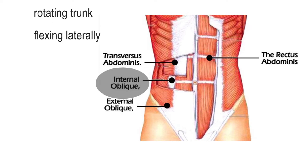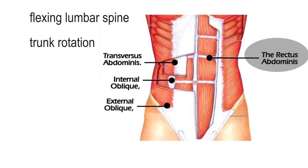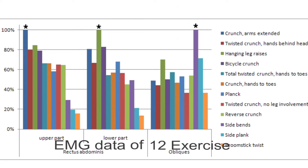Inside that we have the transverse abdominis, also called the TVA, which helps in core stability and compresses the abdominal wall — that is why it is active in many different exercises. Finally, the main muscle we all call the six-pack, properly known as the rectus abdominis, helps in flexing the lumbar spine as in a crunch, or contributes to trunk rotation. According to EMG data from 12 different exercises, it is also clear that upper and lower abs can be trained separately with different exercises.